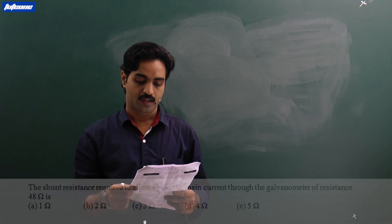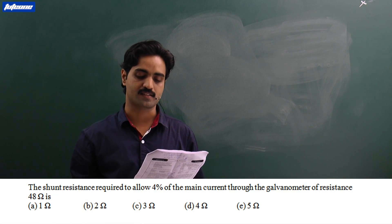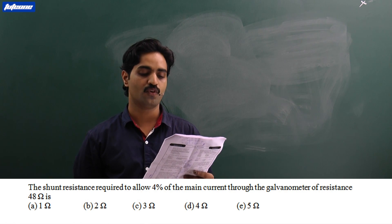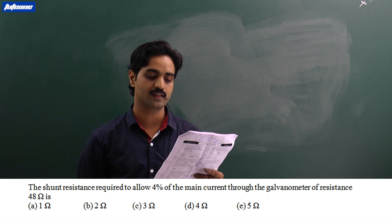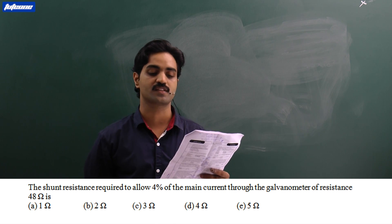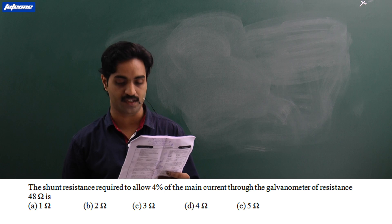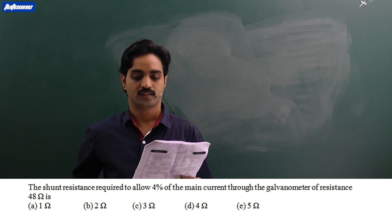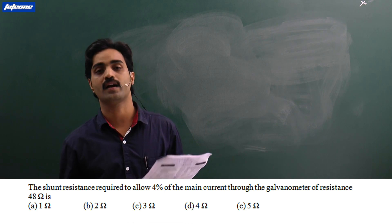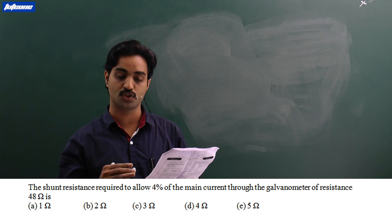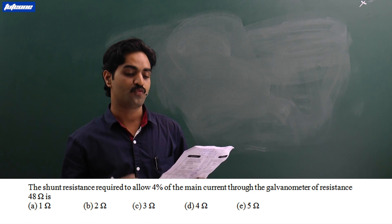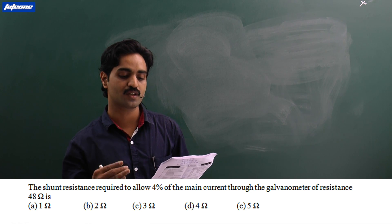Question number 14: the shunt resistance required to allow four percent of the main current through a galvanometer of resistance 48 ohms. This question is based on the conversion of a galvanometer into a meter, and it is given that four percent of the main current is flowing through the galvanometer.